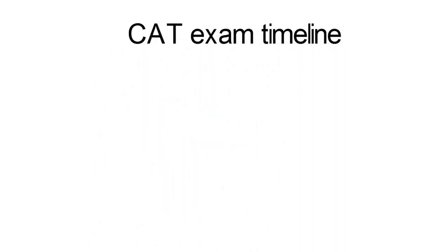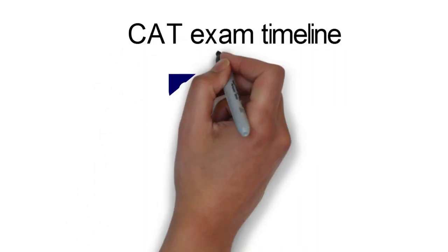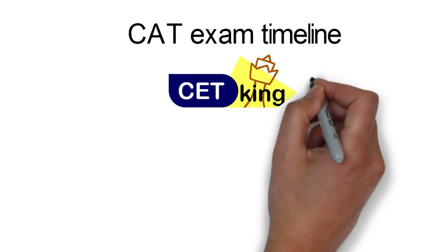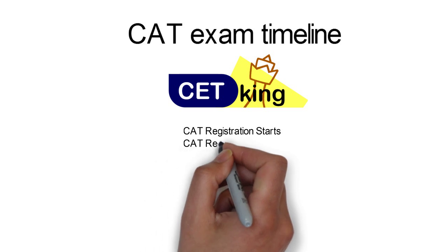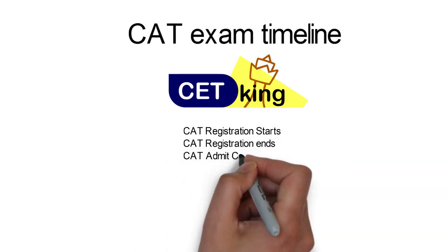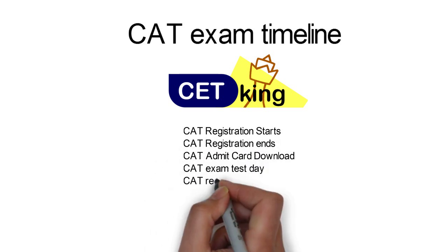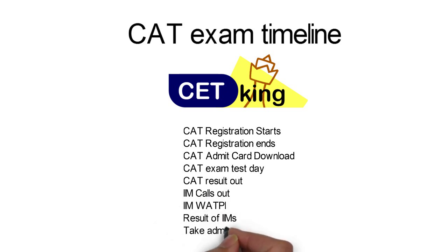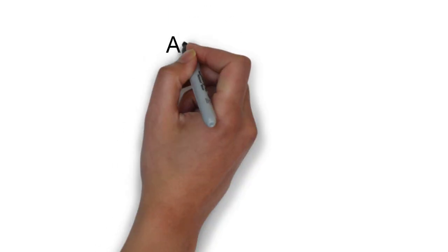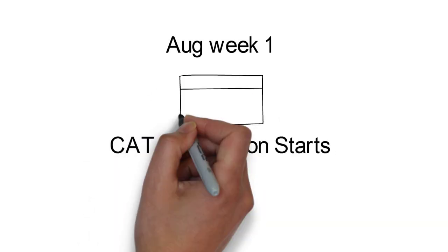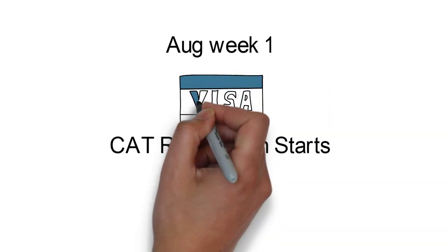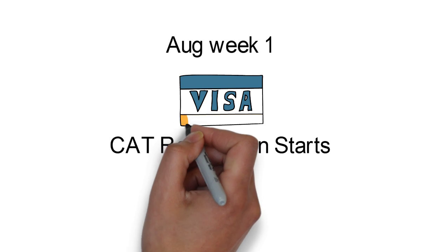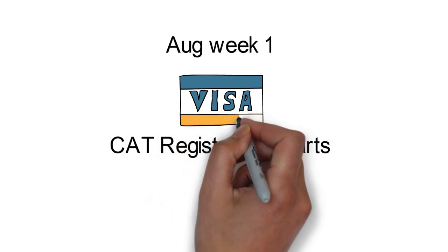In this video we talk about the complete process of the CAT exam — the CAT exam timeline: when registration starts, when it ends, about your admit cards, exam day, results, GDPI, and final admission. August first week will be the day the registration starts, so you can buy the form online on the CAT site.